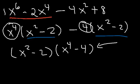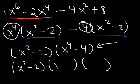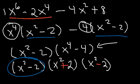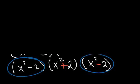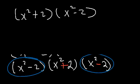Now factor out x squared minus 2, leaving x to the fourth minus 4 inside the remaining parenthesis. We can use the difference of squares technique on x to the fourth minus 4: the square root of x to the fourth is x squared, and the square root of 4 is 2, giving us x squared plus 2 and x squared minus 2. Because x squared minus 2 appears twice, we collect them together. The final answer is x squared plus 2 times x squared minus 2 squared.